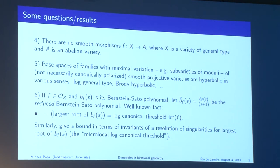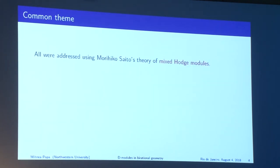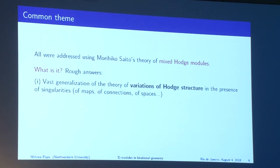These are various directions in which the tools can be applied. The common theme is that these problems are addressed using Morihiko Saito's theory of mixed Hodge modules. One way to think about it is as a big generalization of the theory of variations of Hodge structure in the presence of singularities—singularities of maps, connections on sheaves, or singularities of spaces.